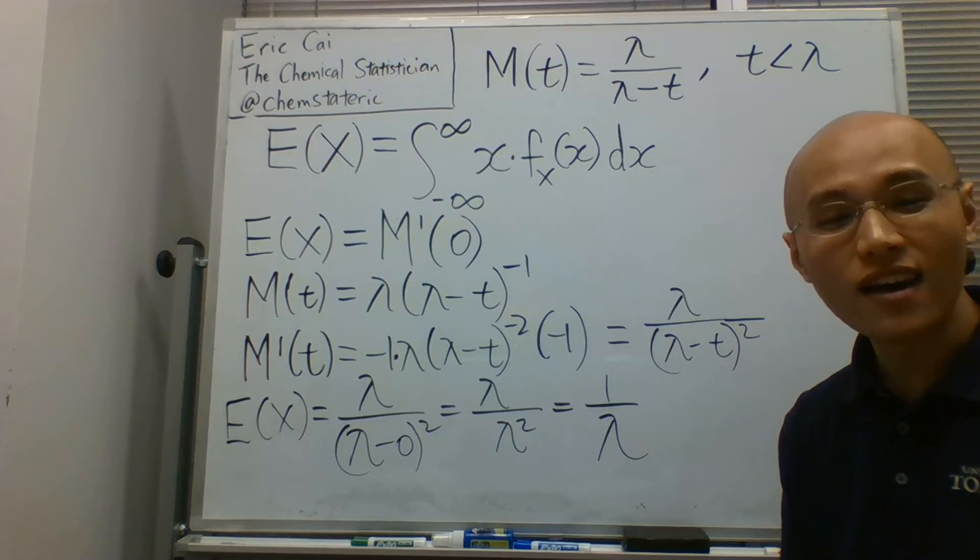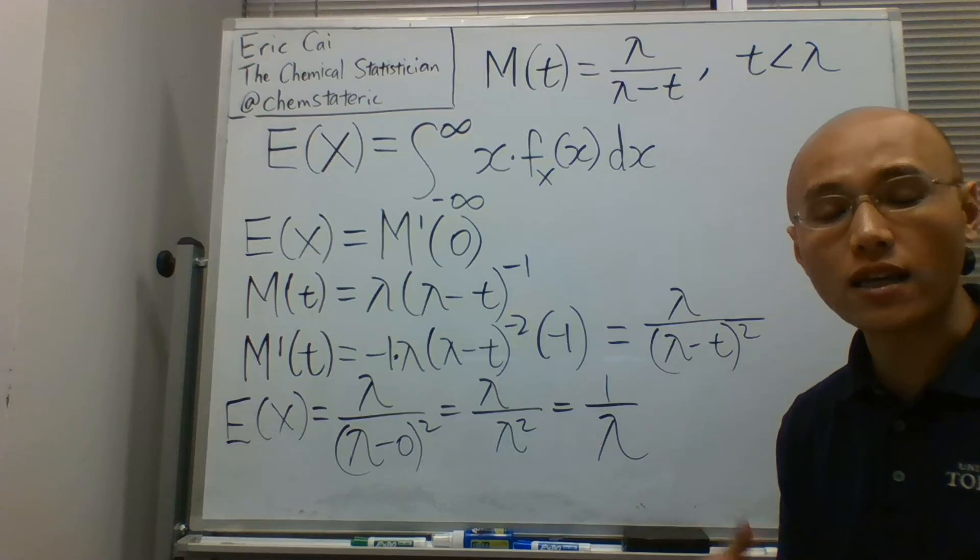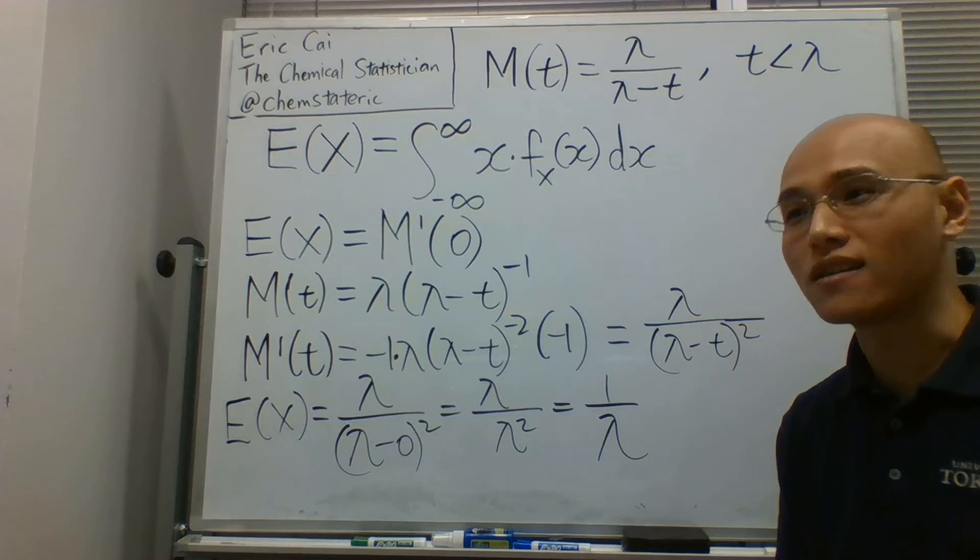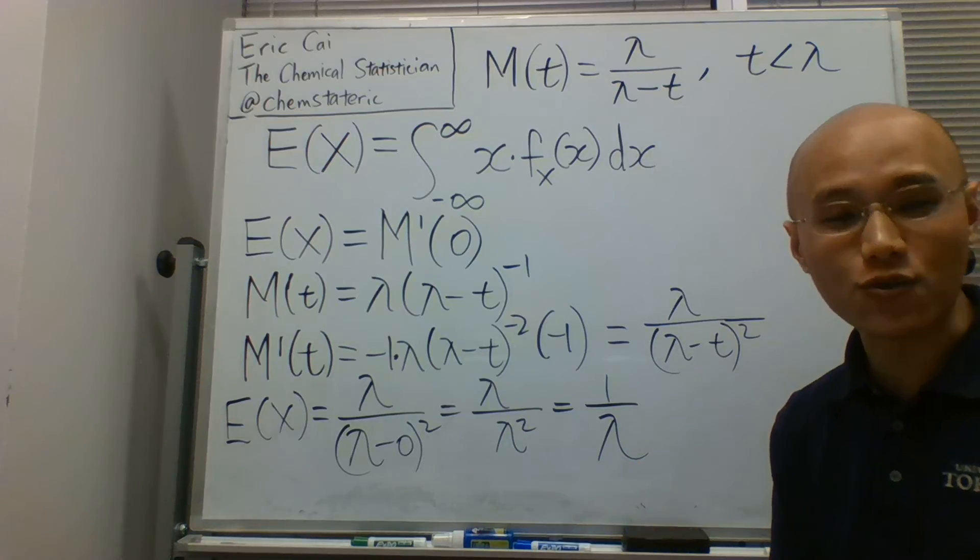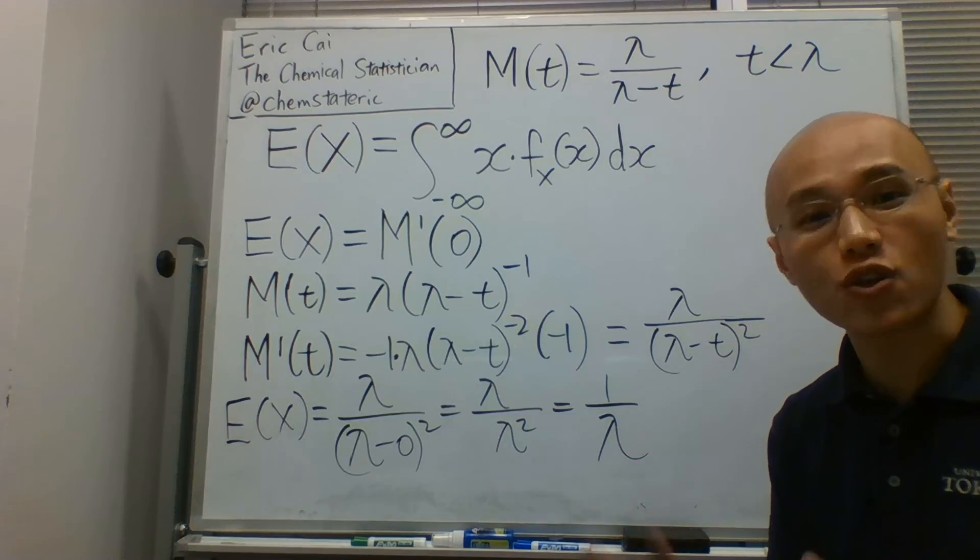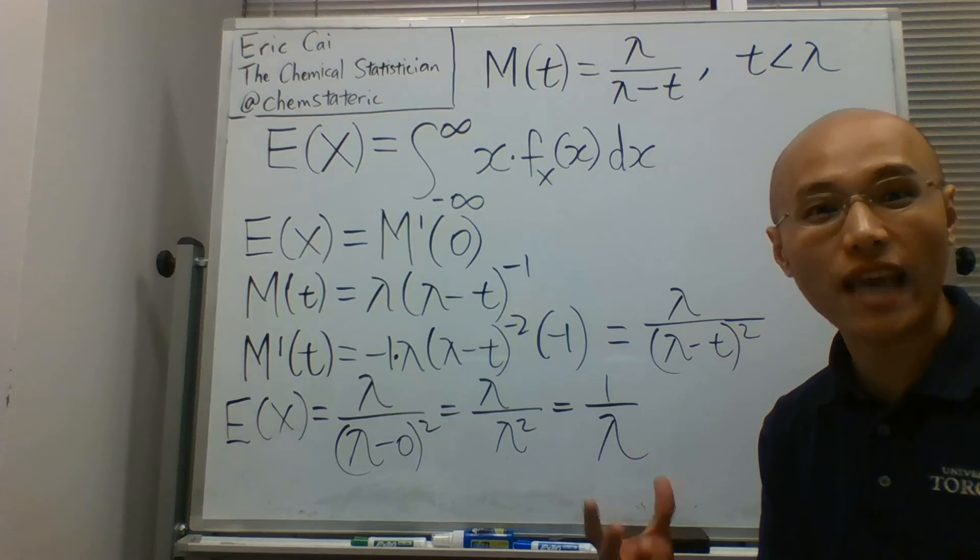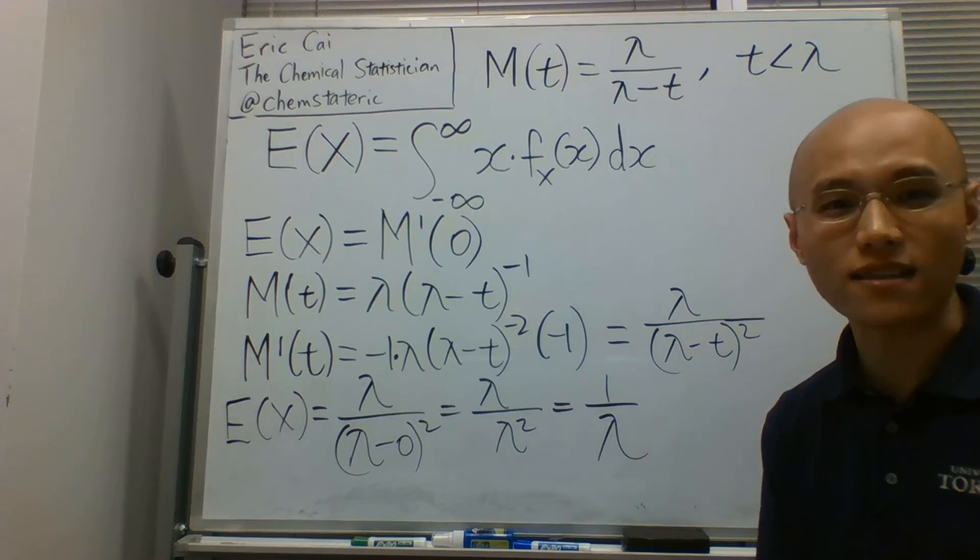This is a pretty simple way of obtaining an exponential random variable's expected value. It's not going to be this easy for every distribution, but I think that this is a good illustration of how the moment generating function can be very useful in some circumstances.